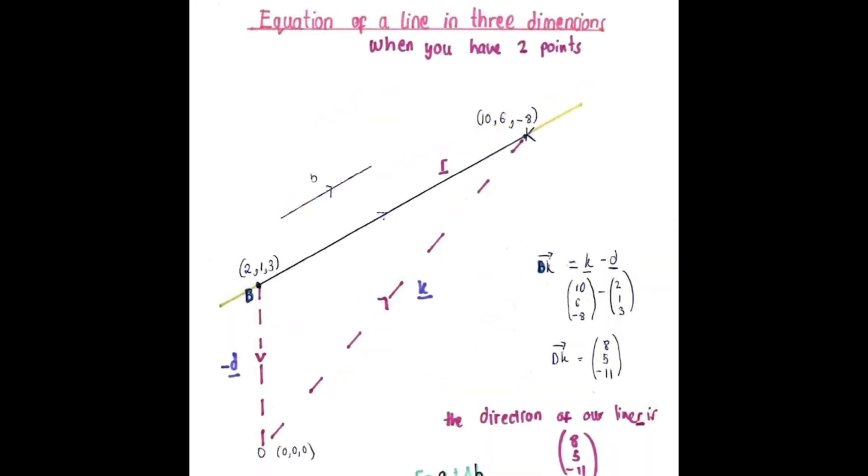To find the equation of line R when you have two points on the line D and K with these coordinates, you find dK and this involves going from D to O then O to K. The vector dK is parallel to this. And you'd calculate dK by doing this.